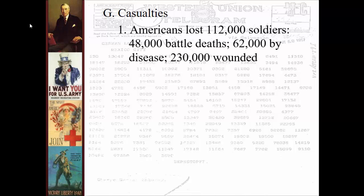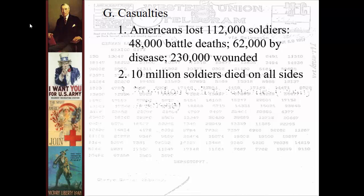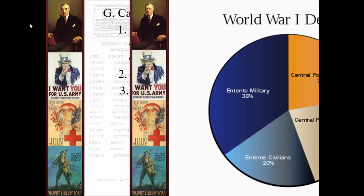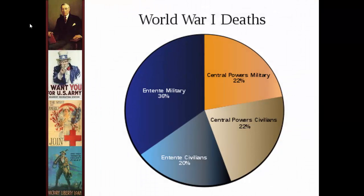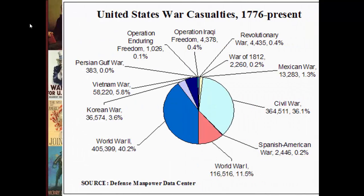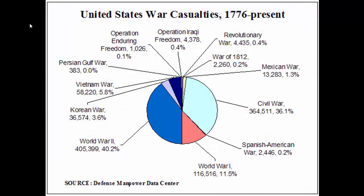Casualties: the Americans lost 112,000 soldiers, about 50,000 in battle. Overall, 10 million troops died in the war and there were 20 million casualties, almost all in Russia. Compared to US casualties in other conflicts — on a pie chart World War I is a small pink slice — nothing like World War II or the Civil War that came before it. Then again, we only fought for about a year in it, as opposed to those conflicts where we fought much longer.